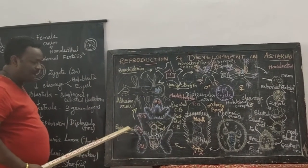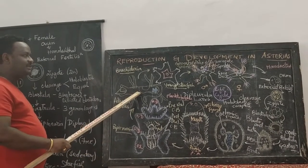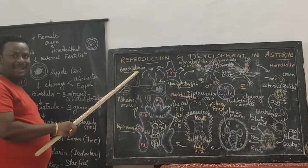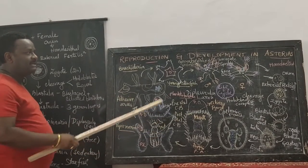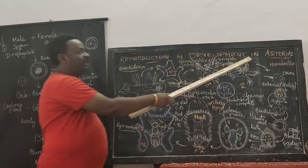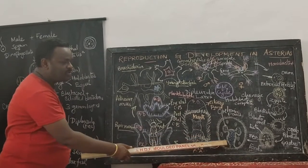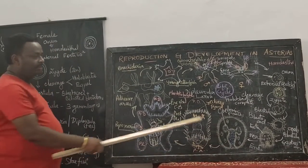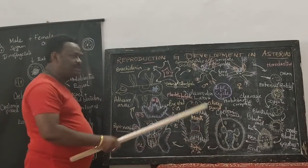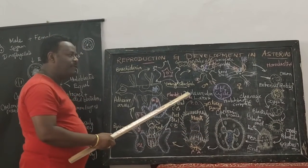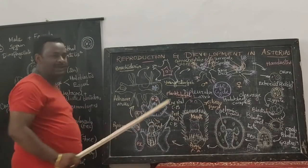The second larval stage is called bipinaria larva. The third larval stage is called brachiolaria larva. So all together, there are three larval stages in the development of Asterias. Soon after the process of gastrulation, the three germ layers are formed, and from all three germ layers, there forms a larva called early bipinaria or diplurula.